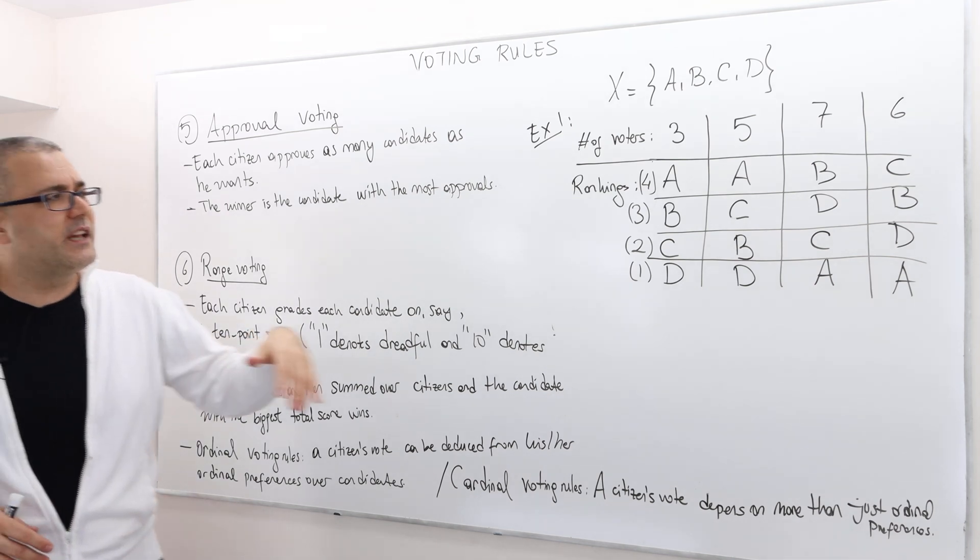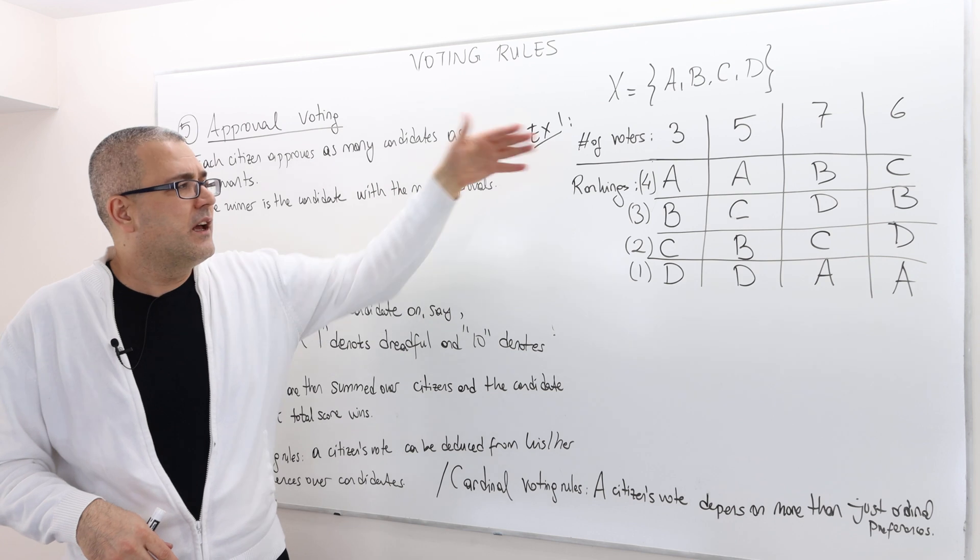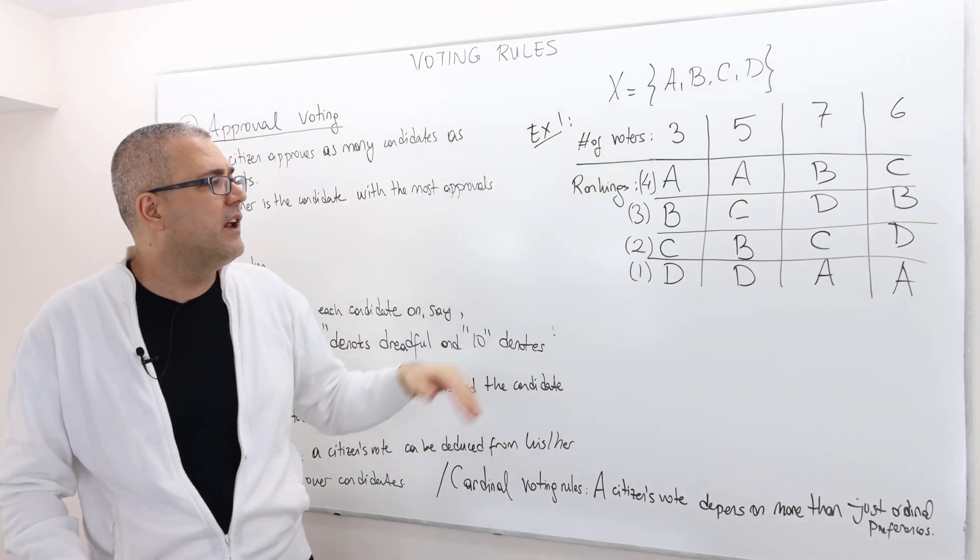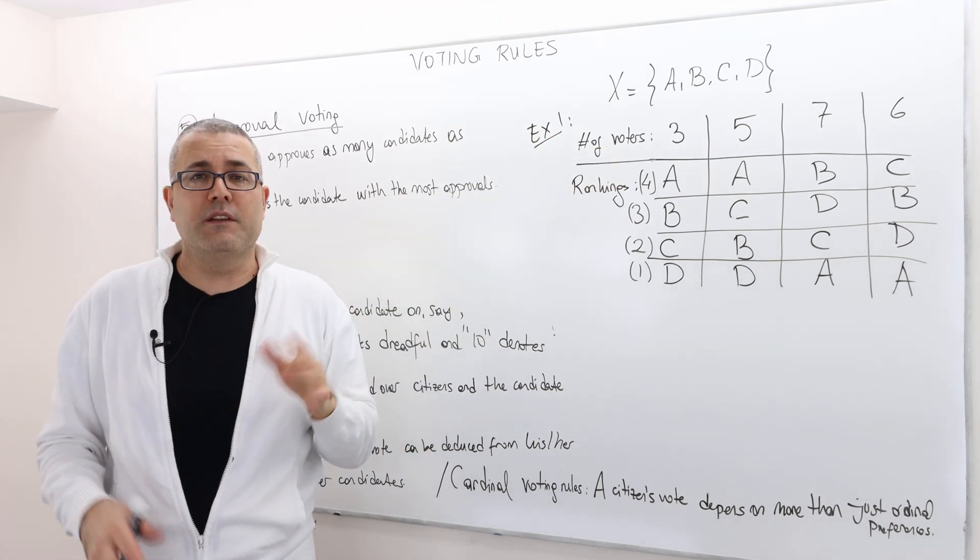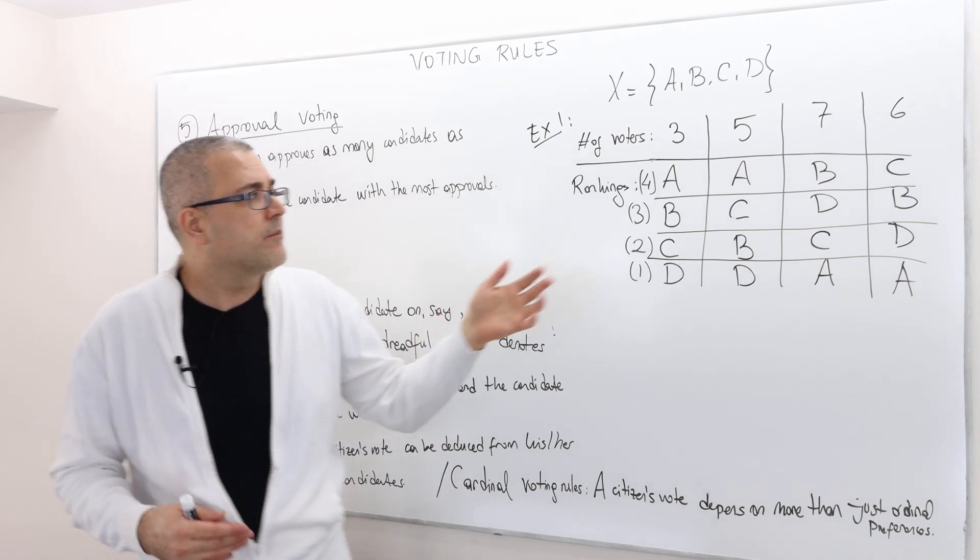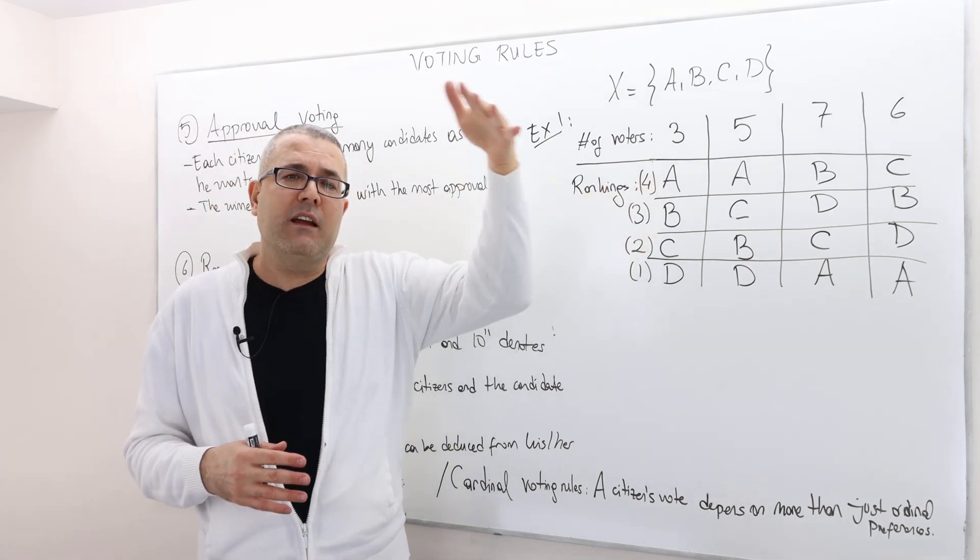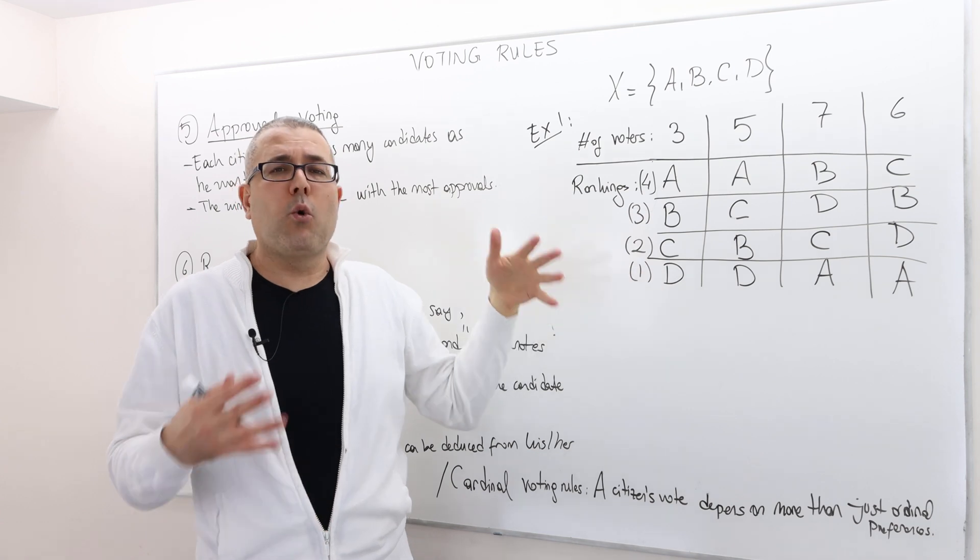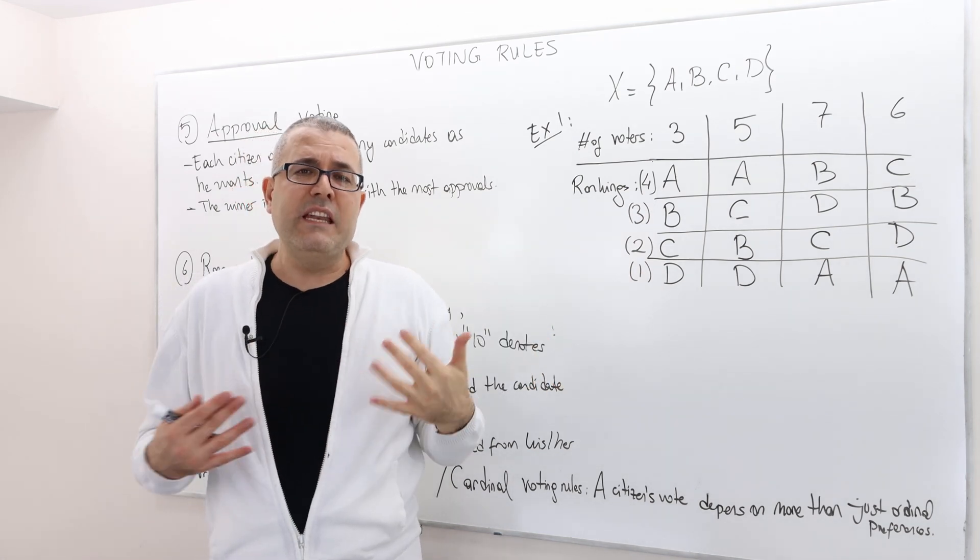And so for each candidate, you say, well, for example, A, 10 points out of 10, and D is 5 points. Well, here, once again, putting A on top in an ordinal way is not enough because,